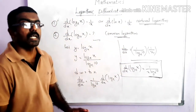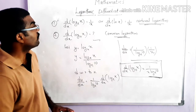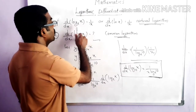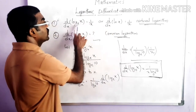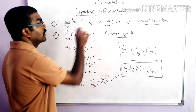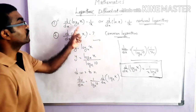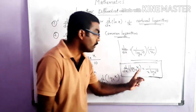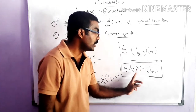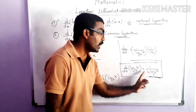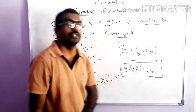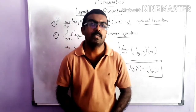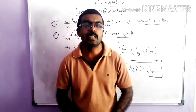So these are the two different situations. First, the natural logarithm: the derivative of log x to the base e, or ln x, equals 1/x. And the derivative of log x to the base 10 equals 1/x times log 10 to the base e. I think you understood the concept. Thanks for watching.